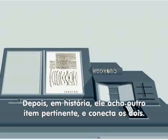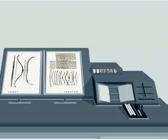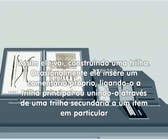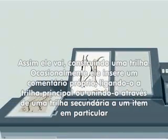Next, in a history, he finds another pertinent item and ties the two together. Thus he goes, building a trail of many items. Occasionally, he inserts a comment of his own, either linking it into the main trail, or joining it by a side trail to a particular item.